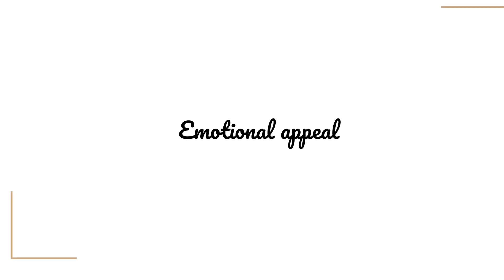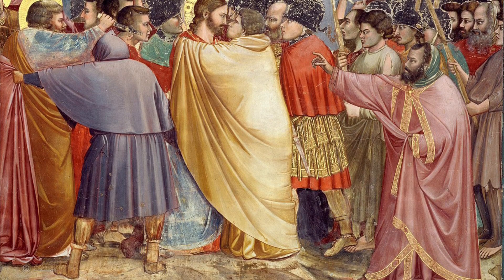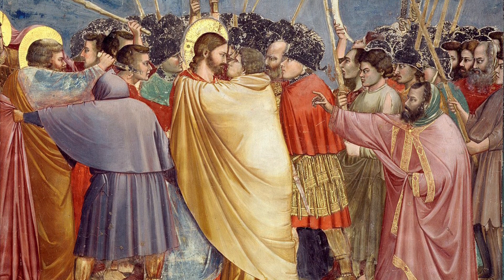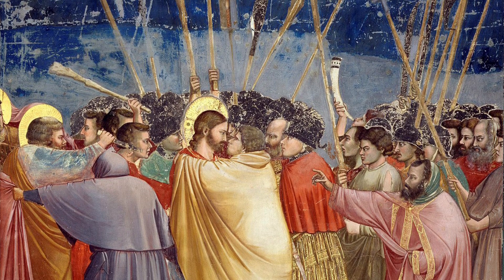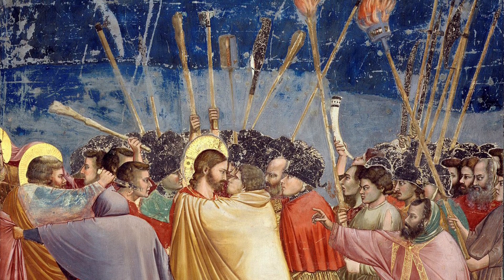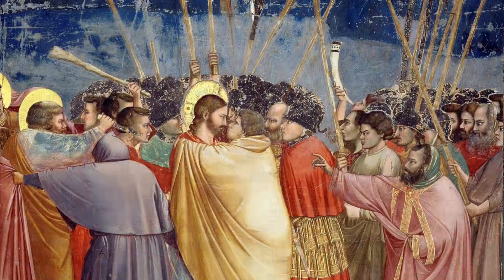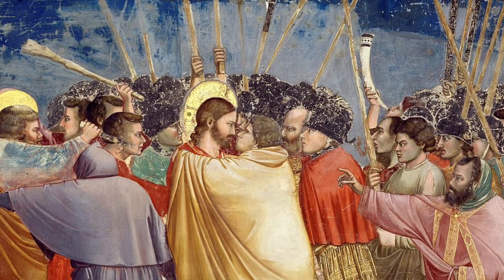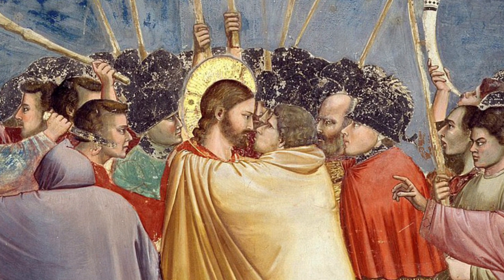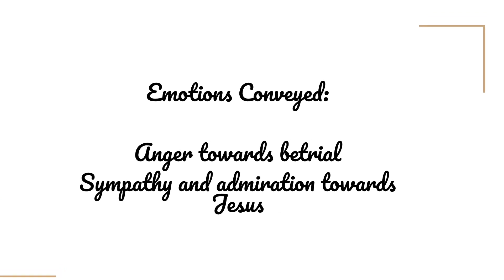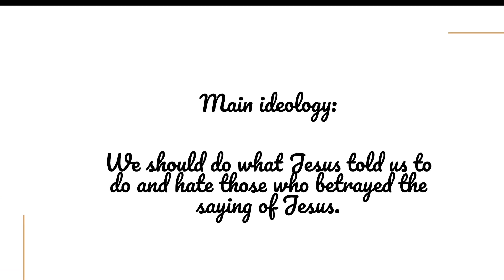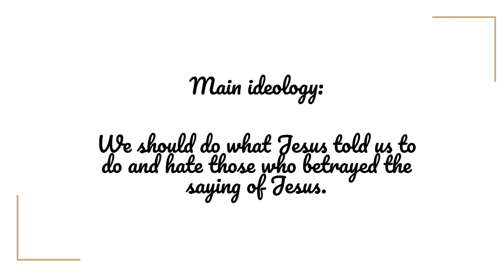Next, let's discuss the emotional appeal. The formalisms of the painting are as follows. As a whole, the picture uses heavy colored tones — dark blue at the top and brown at the bottom — creating a heavy sense of darkness. Surrounded by Roman officers and soldiers holding weapons and torches, there is a murderous atmosphere making people feel a tense struggle. The painter places Jesus and Judas at the visual center, with other figures divided on both sides creating symmetry, showing the dark and light sides of life and a sharp contrast between good and evil. The general emotion conveyed is anger toward betrayal and sympathy and admiration toward Jesus. Together, the main ideology is: we should do what Jesus told us and hate those who betrayed his saying.